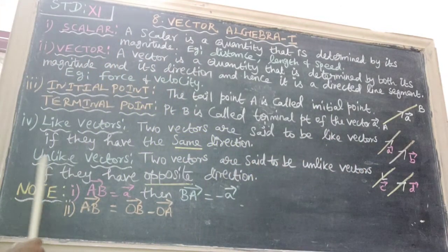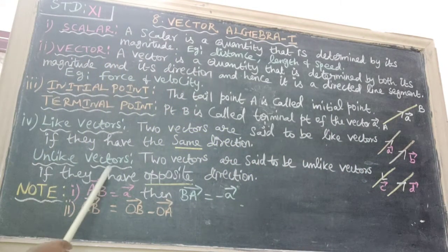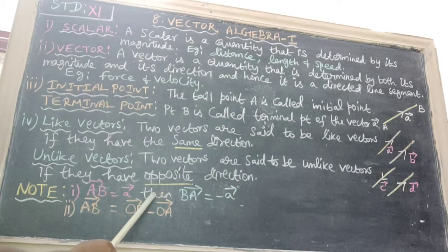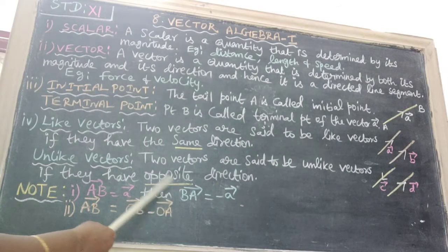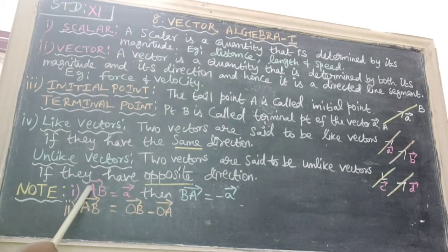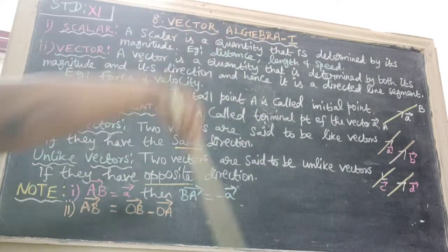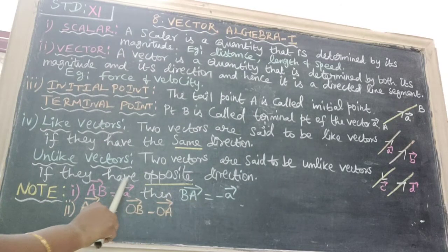Note points: first one is AB vector equal to A vector, then BA vector is equal to minus A vector because of change of direction, opposite direction A to B. Next one is B to A, therefore opposite direction, therefore we put minus A vector.